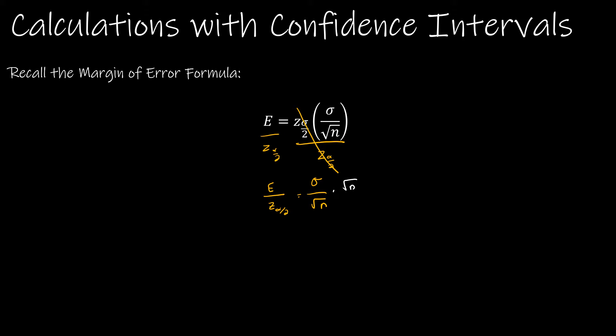Now, I want to get the square root of n so that it's no longer a denominator. So now I have the square root of n times all of this is equal to sigma. I'm going to cheat a little bit and I'm actually going to... No, I'm not going to do that because I don't want to confuse anyone.